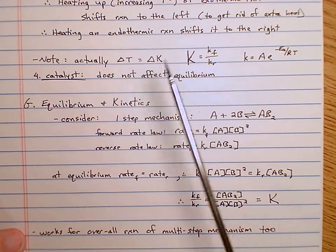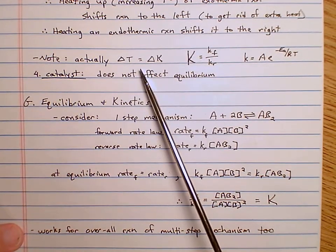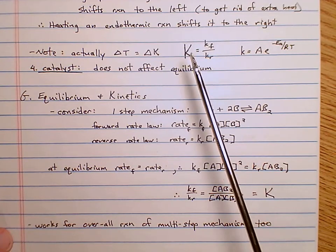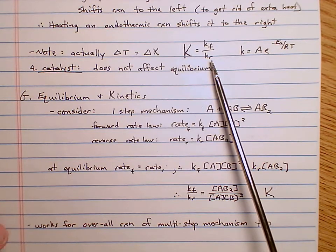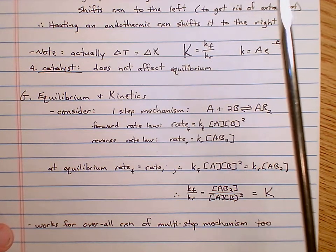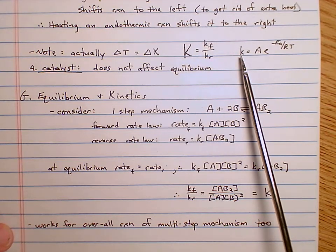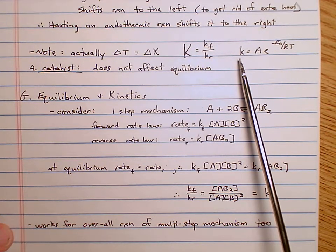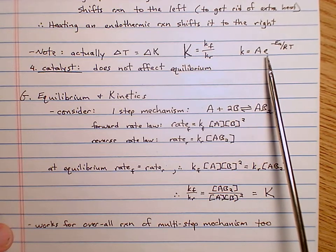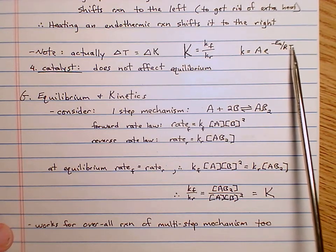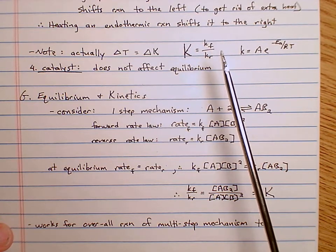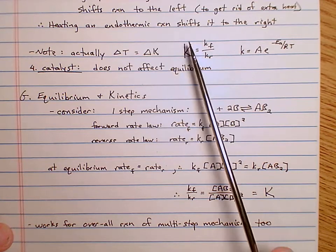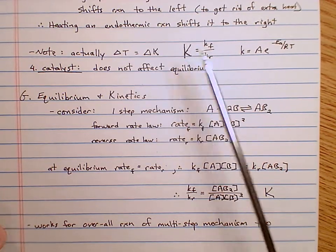The equilibrium constant equals the forward rate constant divided by the reverse rate constant. Rate constants are governed by the Arrhenius equation: k = A·e^(-Ea/RT). Changing the temperature changes the value of the rate constants. If changing temperature affects the forward rate constant more than it affects the reverse rate constant, then you change K, the equilibrium constant — and that's what happens.